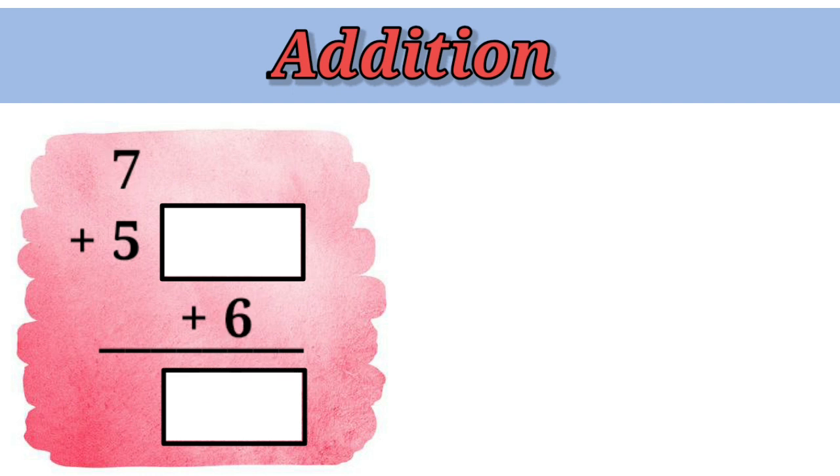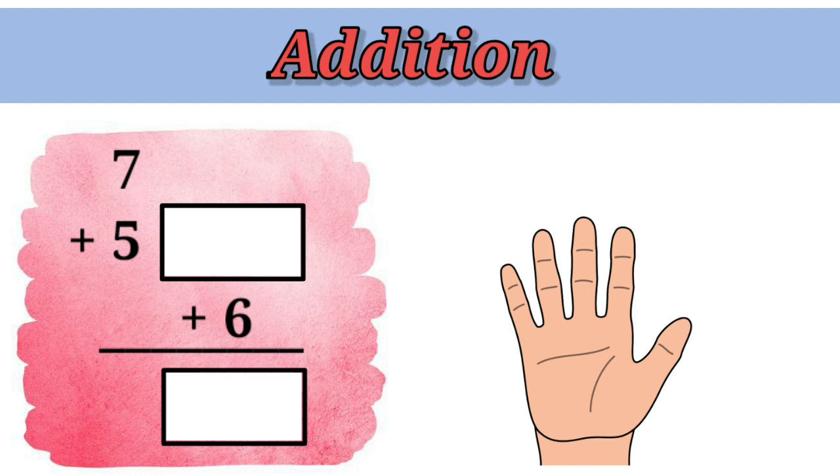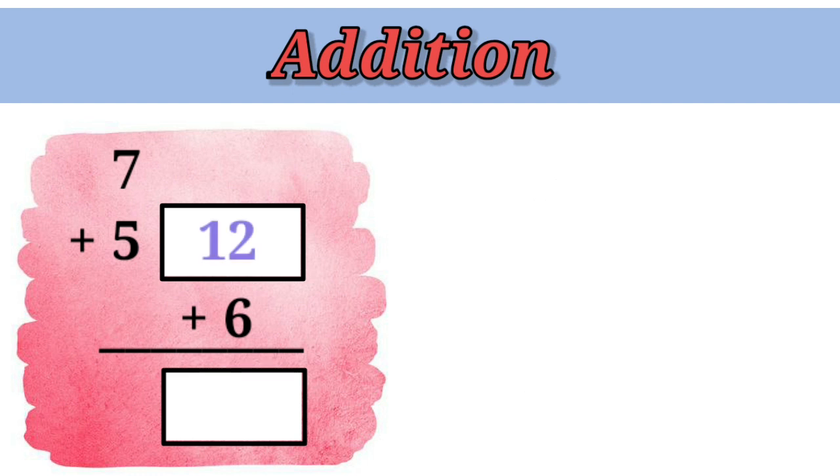Children, let's do one last example. Now, we have to add 7 plus 5. So, let's keep 7 in our mind and count 5 with our fingers. 7, 8, 9, 10, 11, 12. So, 7 plus 5 is 12. Let's put 12 in the first box.